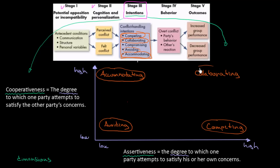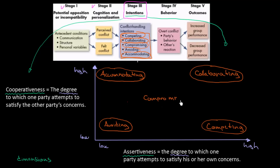And finally there is compromising. I think all of us know what a compromise is — it is somewhere in between. You are at the same time trying to satisfy your own concern but you also care about the other party's concern. So it's going to be somewhere in the middle. As you see in this video, we have talked about the intentions that parties, individuals or groups may have when it comes to some conflict.